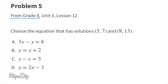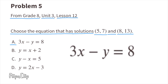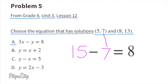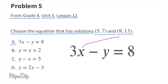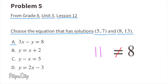Problem number 5, from 8th grade Unit 3 Lesson 12. Choose the equation that has solutions (5, 7) and (8, 13). For equation A, substitute x with 5: 3 times 5 is 15, and substitute y with 7: 15 minus 7 equals 8. Since 8 equals 8, the first ordered pair is a solution. Now substitute x with 8: 3 times 8 is 24, and substitute y with 13: 24 minus 13 equals 11. Since 11 does not equal 8, both ordered pairs are not solutions for equation A.